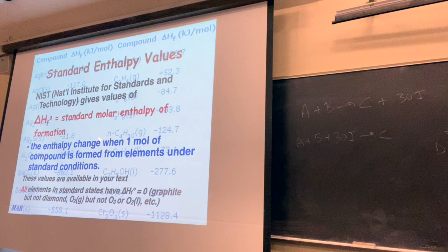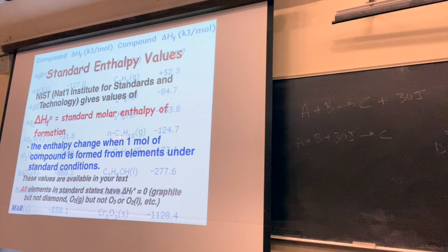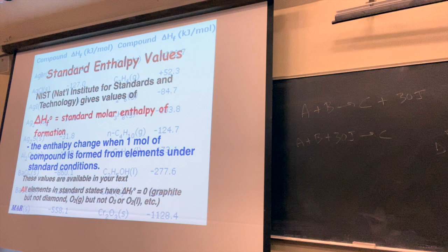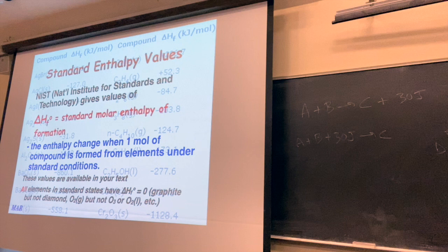Formation means you have only one mole of compound formed, and the reactants are elements in their standard states. For this example with a value of negative 124.7, that means you get that amount of energy out if: A, you form one mole of this compound, and B, the reactants are elements in their standard states. This compound has carbon and hydrogen. Hydrogen's standard form is H2 gas, and carbon is usually graphite — the simplest form, not diamonds or C60. This is the energy upon making it from carbon and hydrogen.